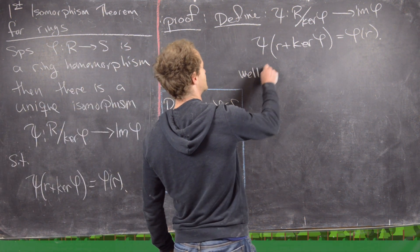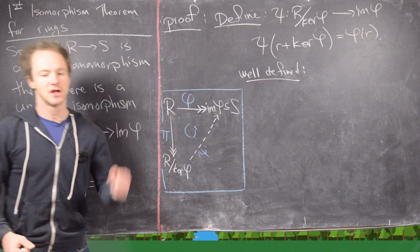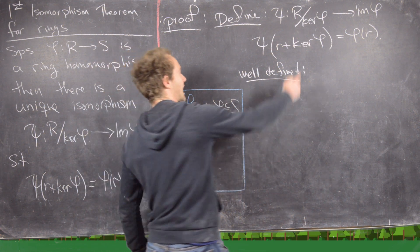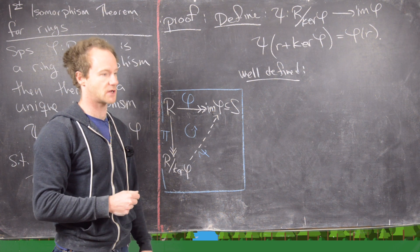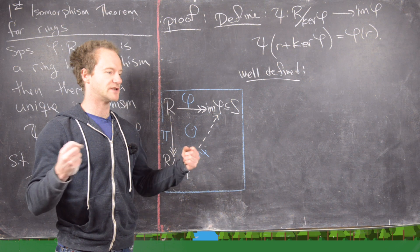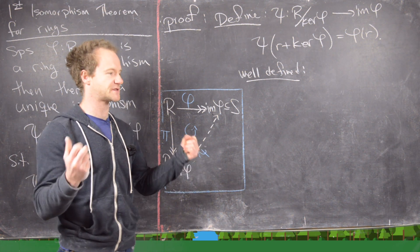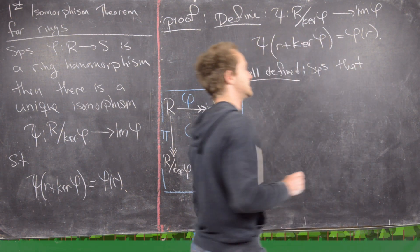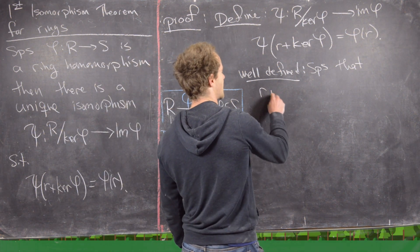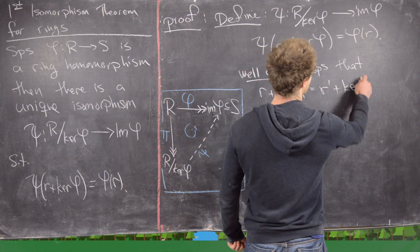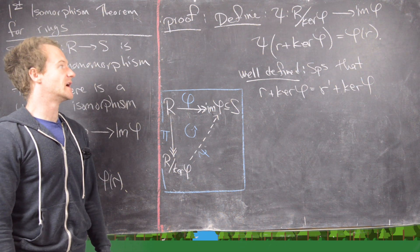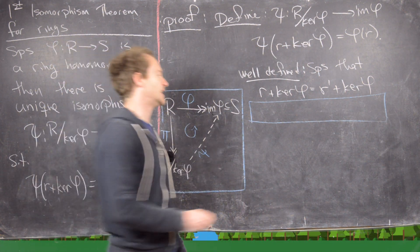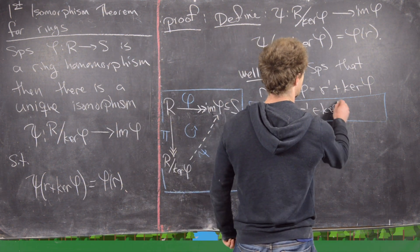We need to show that this function is well defined. How do you know that you need to check that? You look at the domain and ask: can elements in the domain have different names but be the same? In fact they can, because cosets can have different representatives but be the same coset. Another example is rational numbers — one half and two fourths have different names but are the same. So we suppose that we have two cosets that are the same but maybe have different names: R plus kernel of phi equals R prime plus kernel of phi. The equality of these two cosets is equivalent to saying R minus R prime is in the kernel of phi.